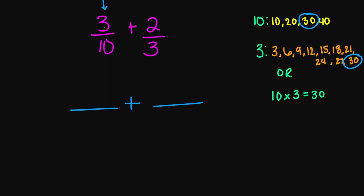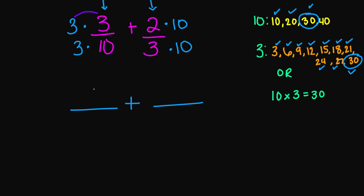Starting with 3 over 10 — what number do I multiply my 10 with to get 30? Counting up: 1, 2, 3 — if I multiply by 3, I get 30 in my denominator. And whatever I do to my denominator I do to the numerator as well. For 2 over 3 — I need to multiply by 10. So: 3 times 3 is 9, 3 times 10 is 30. And 2 times 10 is 20, and 3 times 10 is 30. Now that my denominators are the same, 9 plus 20 is 29, and that's going to be over 30.